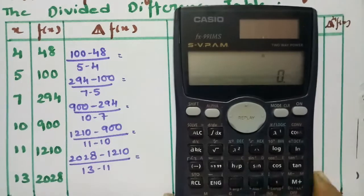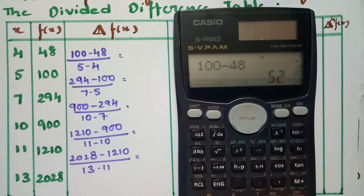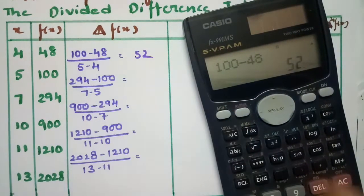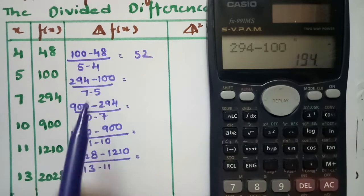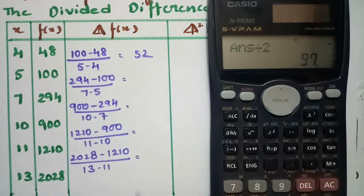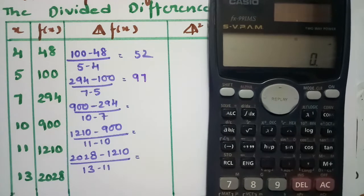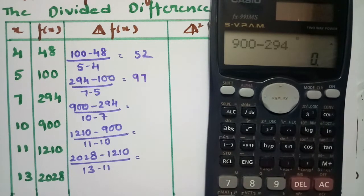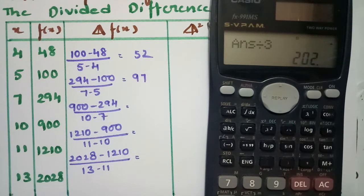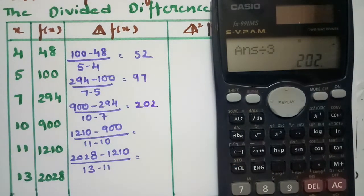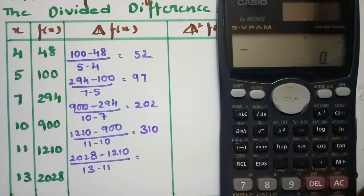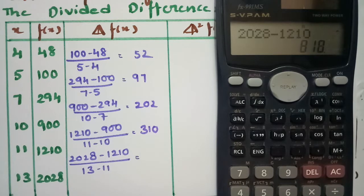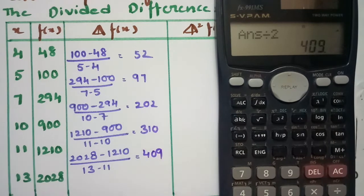Let me calculate all these values. First: 100 minus 48 divided by 1 equals 52. Next: 294 minus 100 divided by 7 minus 5 (i.e., divided by 2) equals 97. Then: 900 minus 294 divided by 3 equals 202. Next: 1210 minus 900 divided by 1 equals 310. And: 2028 minus 1210 divided by 2 equals 409. This completes the first difference table.